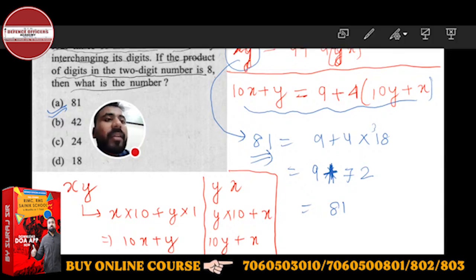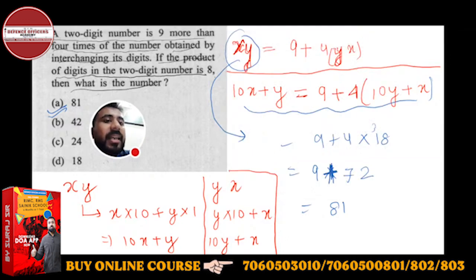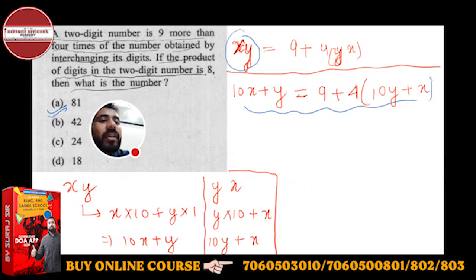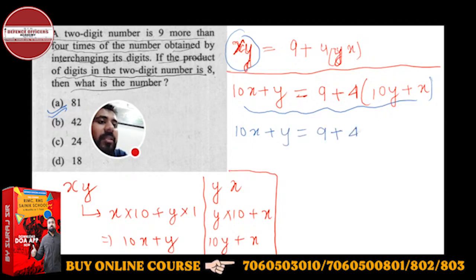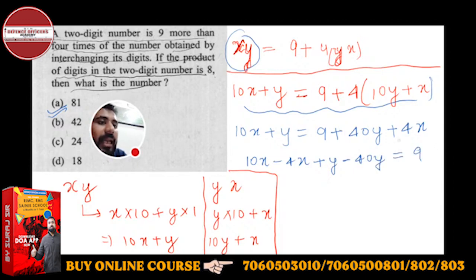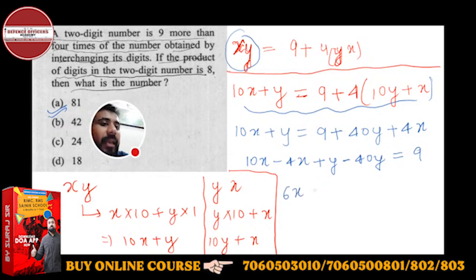Now let's see how to solve this subjectively. We already have our equation. Solving 10x + y = 9 + 4(10y + x): this gives 10x + y = 9 + 40y + 4x. Bringing like terms together: 10x − 4x + y − 40y = 9, which gives 6x − 39y = 9.